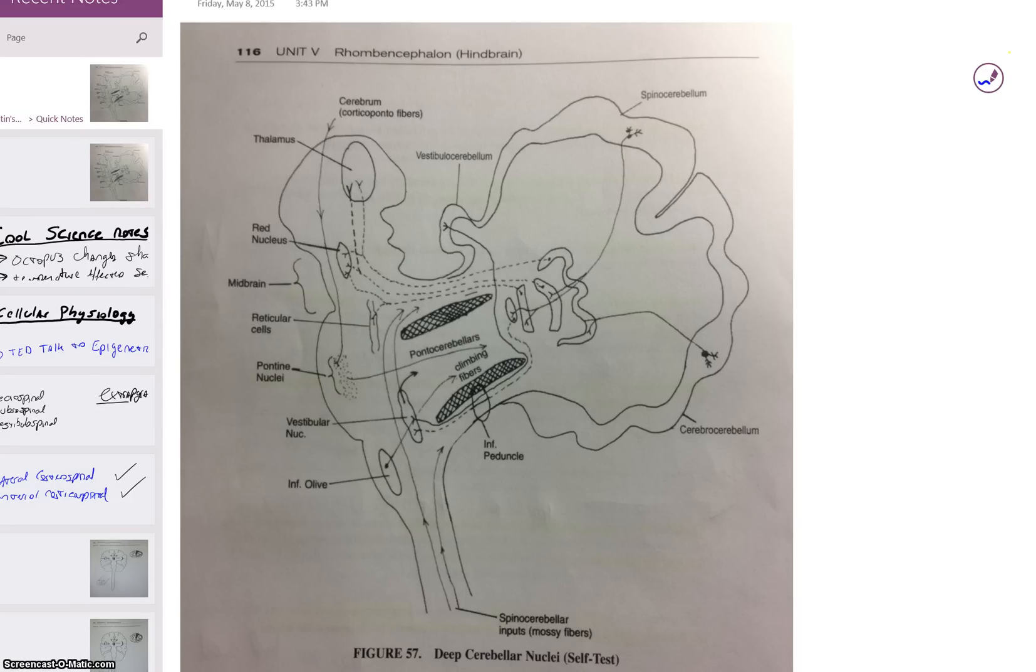So first we've got the cerebellum here, big thing back here. Two fibers coming in - there's two options. We can have mossy, which we've talked about, or we can have climbing. Those are the only two options.